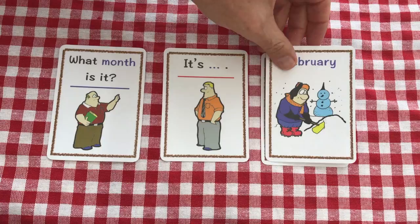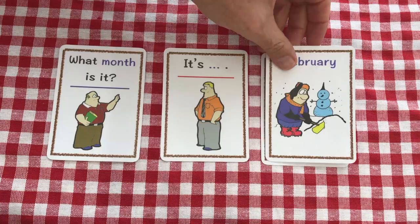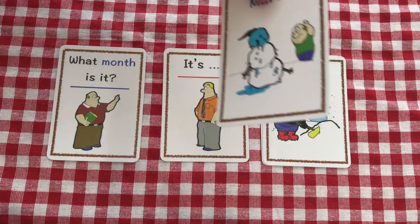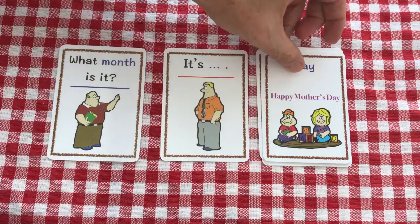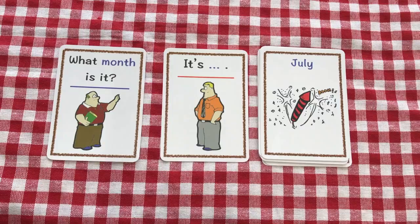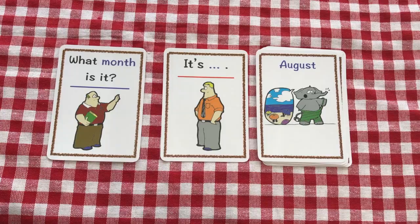What month is it? It's January. What month is it? It's February. What month is it? It's March. What month is it? It's April. What month is it? It's May. What month is it? It's June. What month is it? It's July.